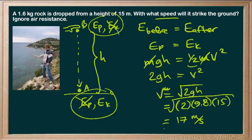That is the velocity of the rock just as it's about to hit the ground. It will be a tiny bit under that in real life because there is some wind resistance, but given that it's a rock and only 15 meters, the 17 meters per second will be pretty accurate — just a tiny bit under.